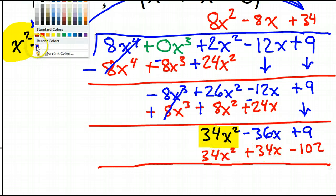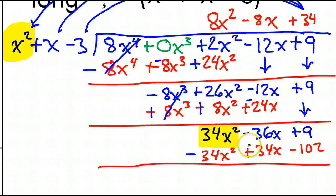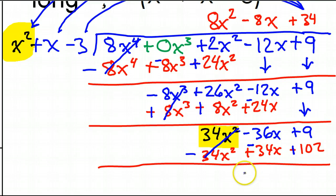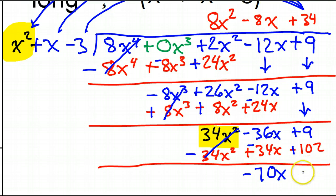Now it's time to subtract by changing signs. This becomes negative, this becomes negative, and this becomes positive. These cancel out. Negative 36x and negative 34x: negative 30 and negative 30 is negative 60, and 6 and 4 is another 10, so that's negative 70x. Then 102 plus 9 is 111. So that's the end of the line — we already have the constant, which makes this the remainder.